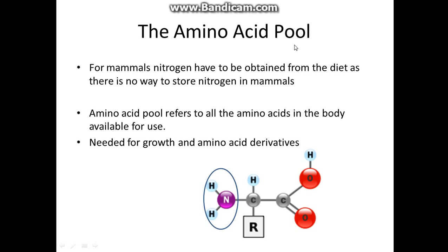In mammals, the nitrogen has to be obtained from the diet as there is no way to actually store the nitrogen permanently. The amino acid pool refers to all the amino acids in the body available for use — in circulation — and they are generally needed for growth and derivatives of amino acids such as proteins.